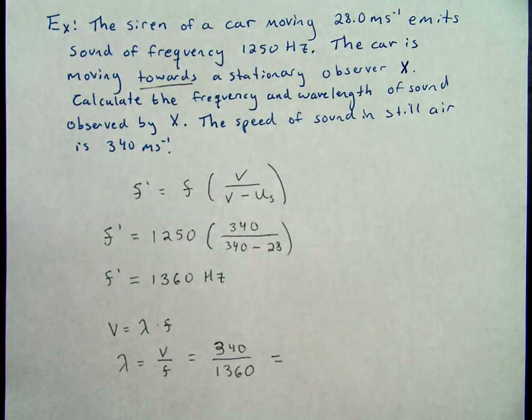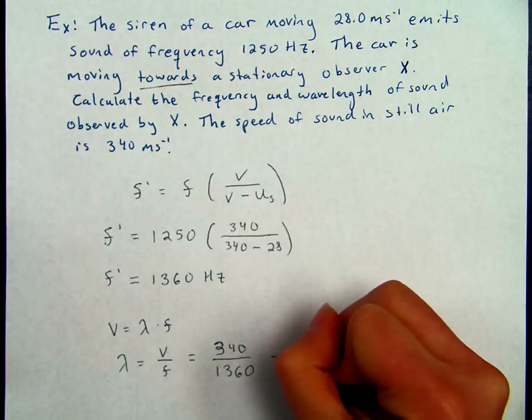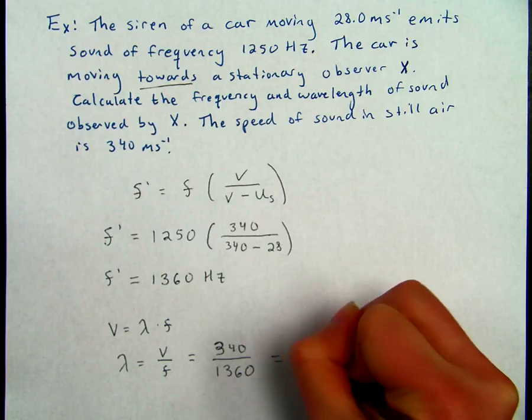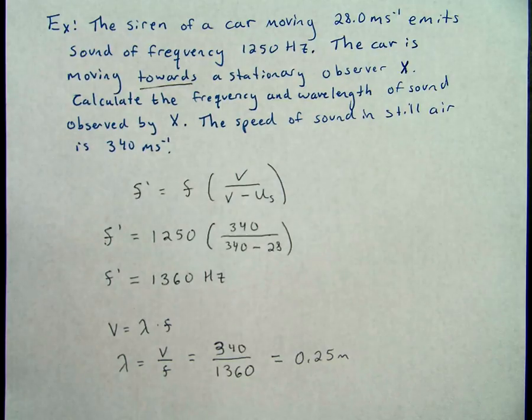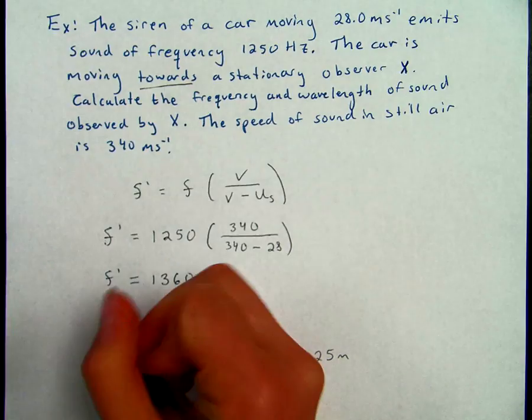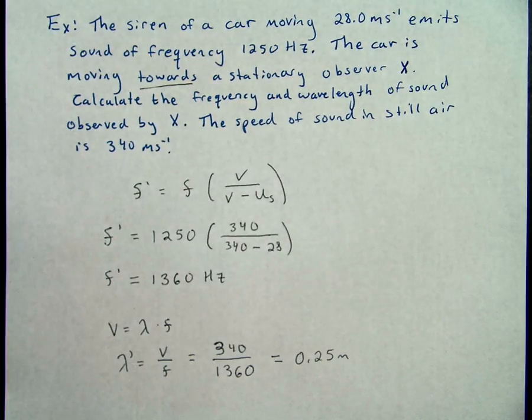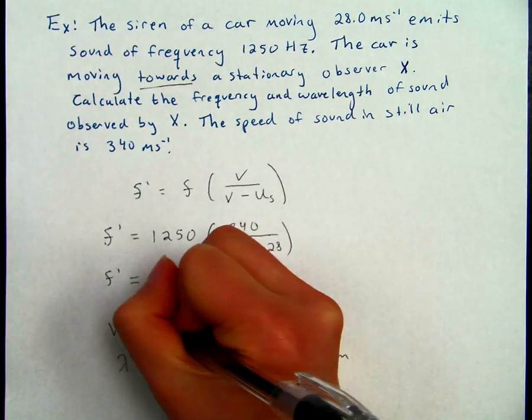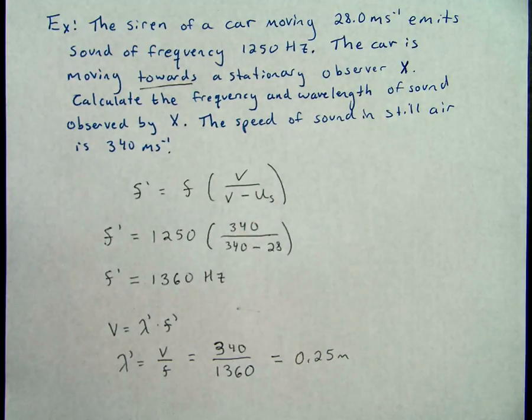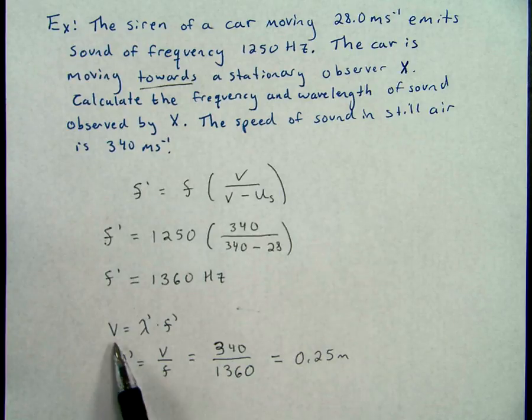Which leaves our observed wavelength to be about 0.25 meters. Sometimes if you look in other online resources, you'll see that this is considered lambda prime for the observed or apparent wavelength. So you would get apparent and apparent, but it still would equal together 340 meters per second.